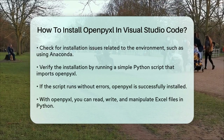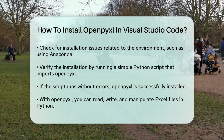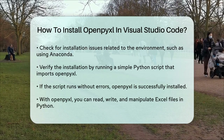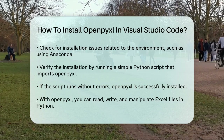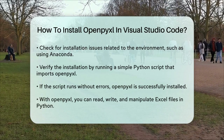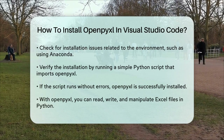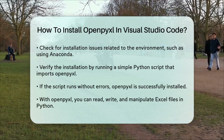Once the installation is complete, you can verify that OpenPixel is installed by running a simple Python script. For example: import openpixel; print openpixel installed successfully. If this script runs without errors, you know that OpenPixel is installed and ready to use in your Visual Studio Code environment.